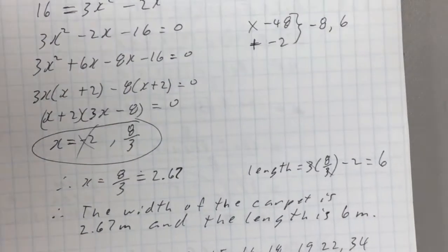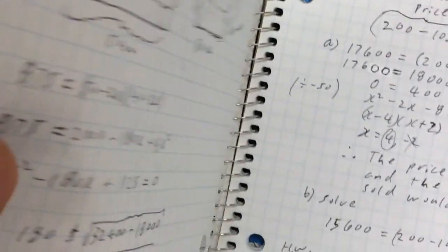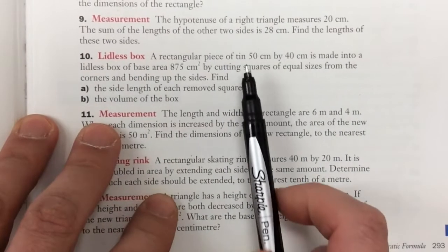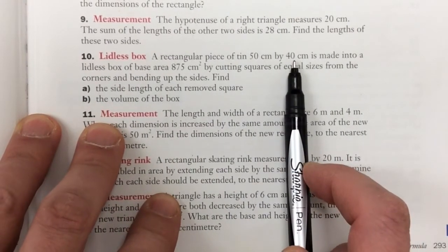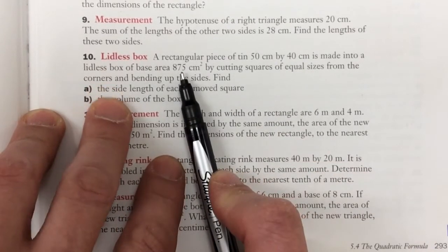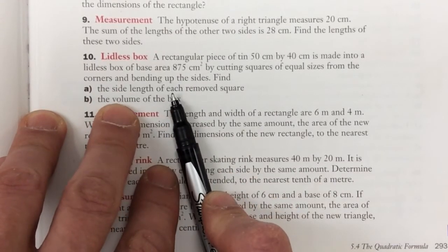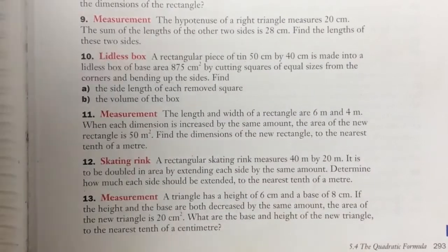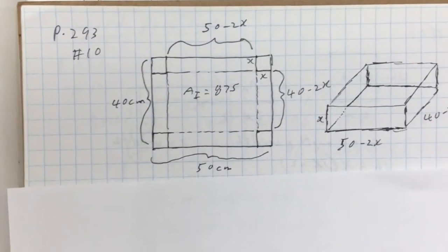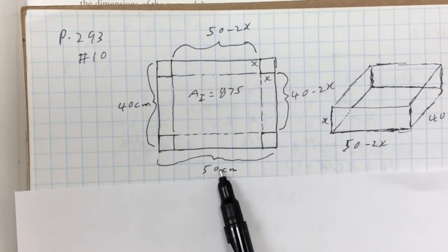The next problem is page 293, number 10: Lidless Box. A box is cut from a 50 centimeter by 40 centimeter piece of tin, and its base area is 875 square centimeters. We need to find the side length of the removed corner squares. Here's the picture: the whole piece of tin is 50 cm by 40 cm.